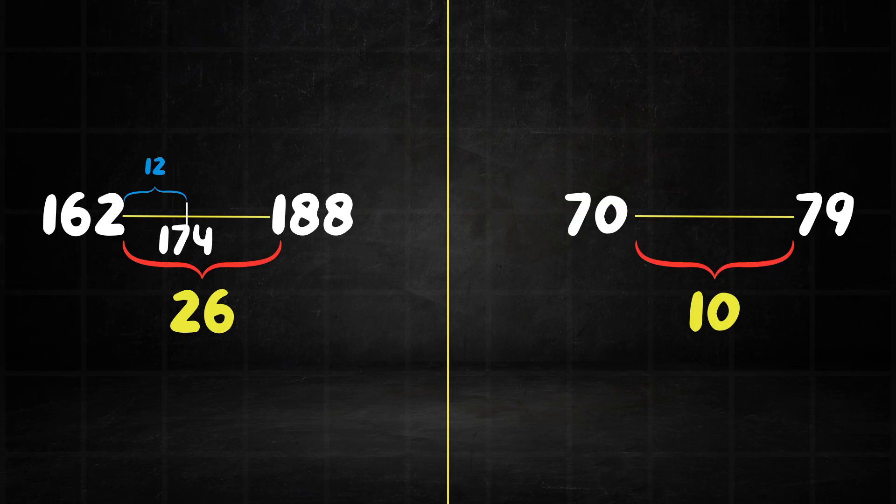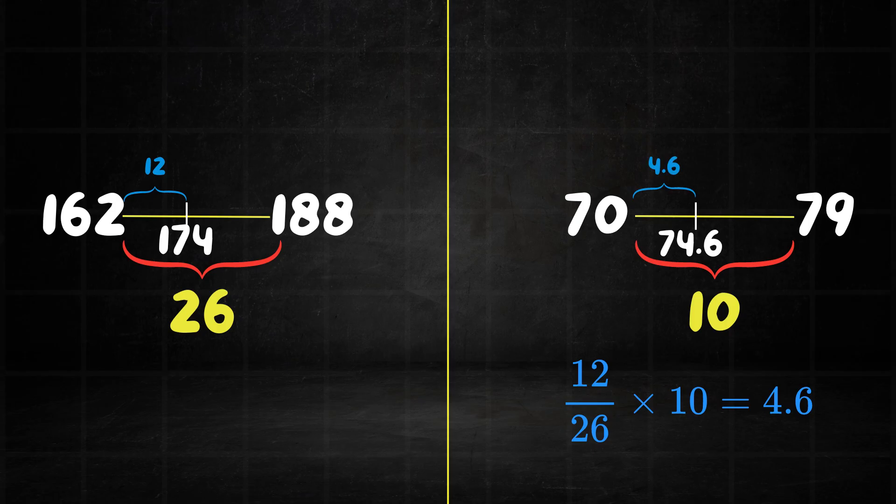So we can use proportion to find out where 174 would lie on our 10 mark scale. So that would be 12 divided by 26 multiplied by 10, and that gives us 4.6. So that means Bob has a percentage uniform mark of 74.6.